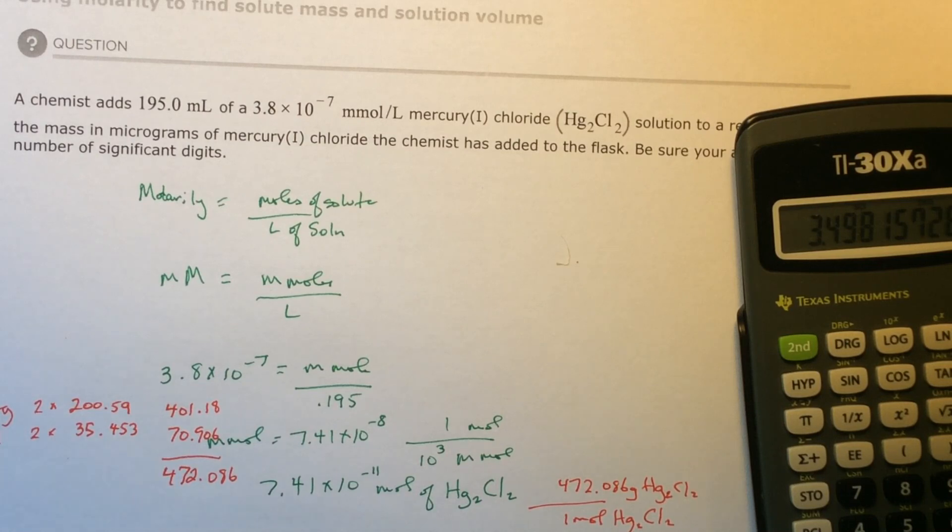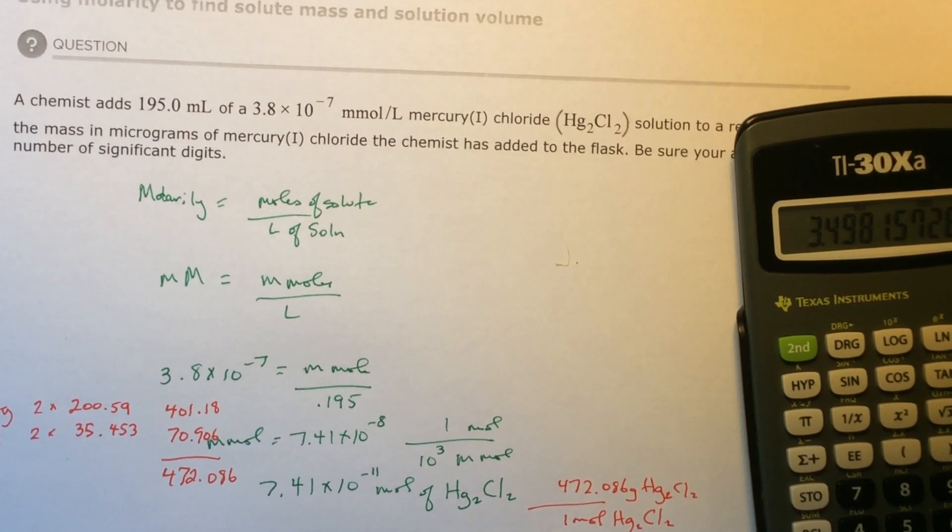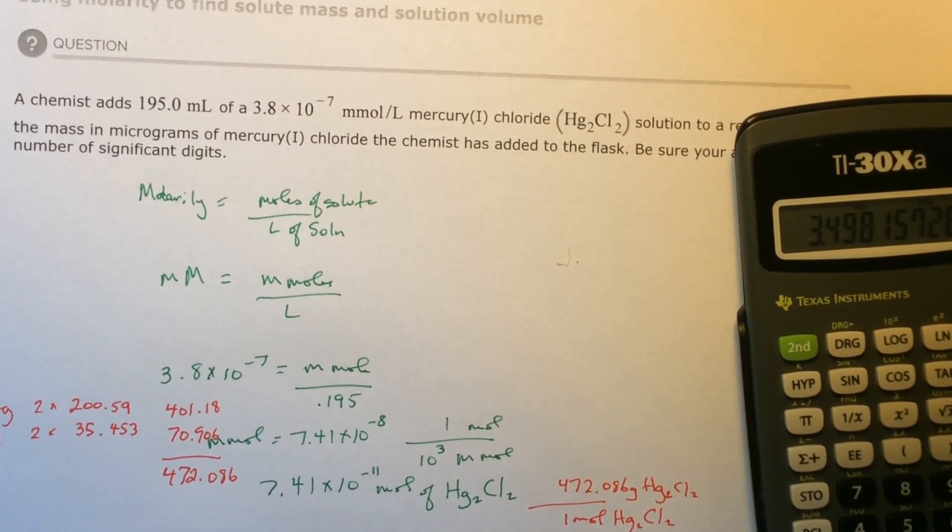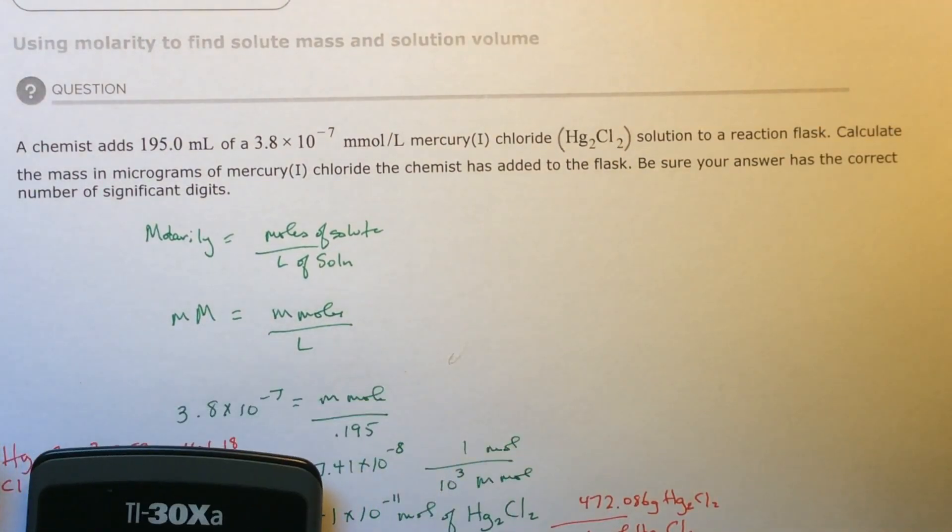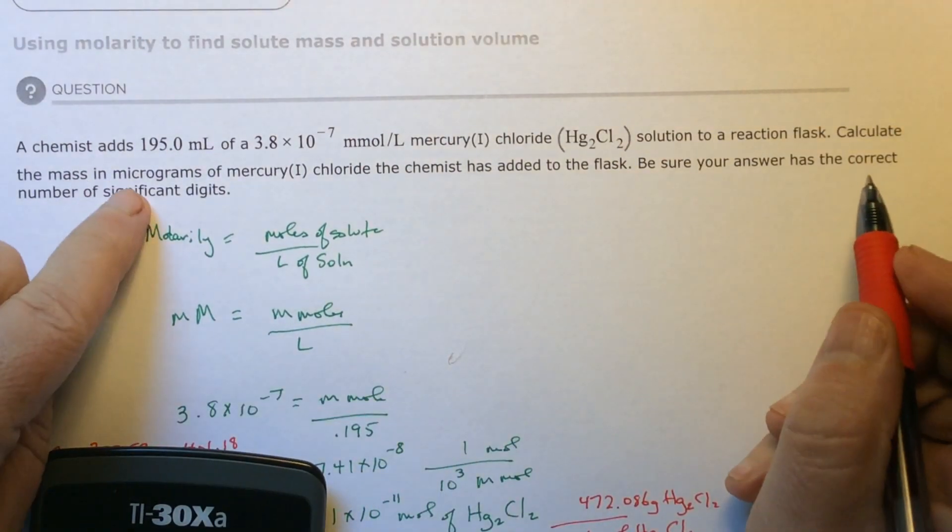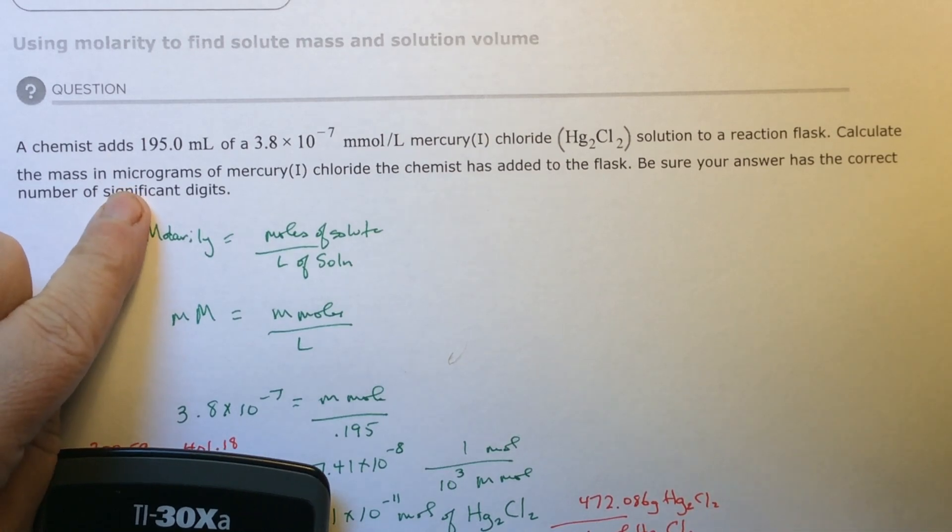How much are we talking about? This is now 3.498 grams of Hg2Cl2. Is that what I'm asked for? I've always checked at the end to see if that's what I'm asked for. Calculate the mass in micrograms. I have to make one more change.